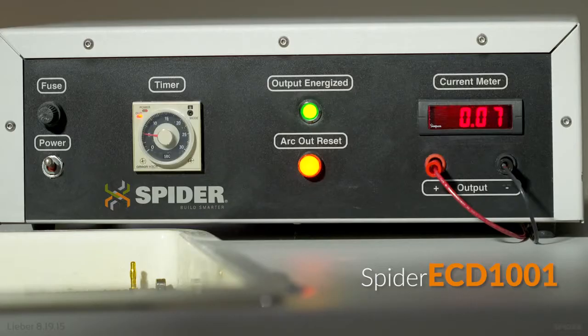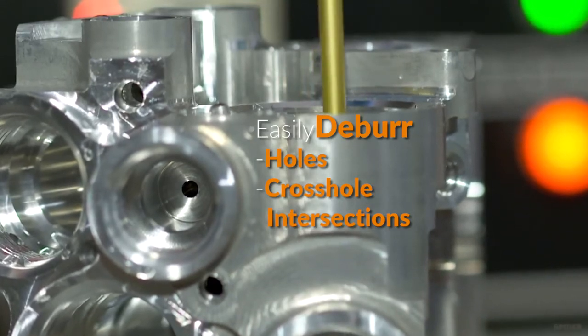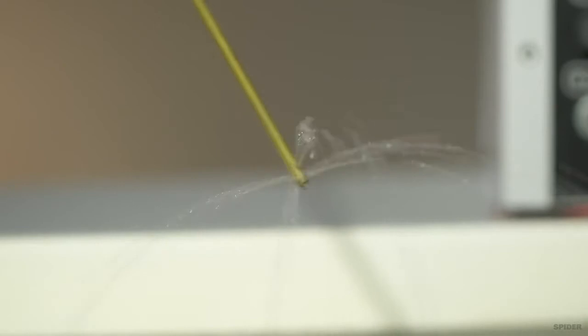Using interchangeable handheld probes in the lower powered Spider ECD model 1001 machine, we can easily deburr holes and cross hole intersections. This one features four 90 degree cross holes that distribute the electrolyte.